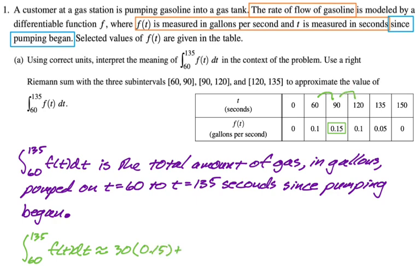And then plus, we're going from 90 to 120, which is going to be 30. And then at the right endpoint, we get 0.1. And then plus, we're going from 120 to 135, which is 15. And the right endpoint is 0.05.